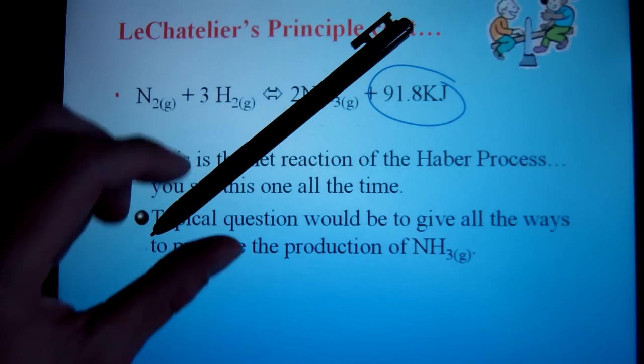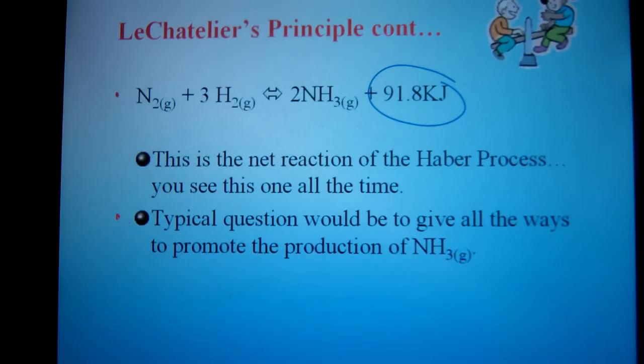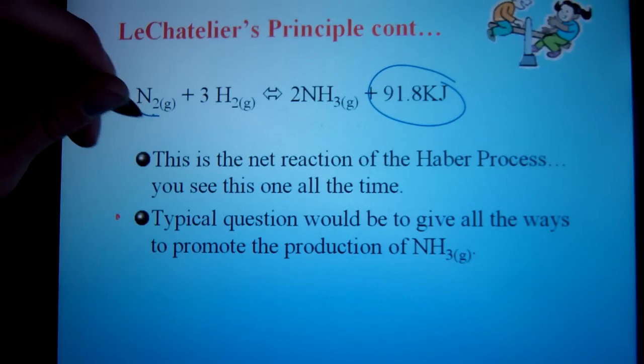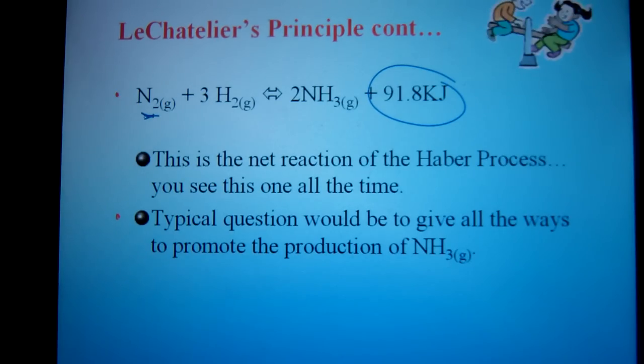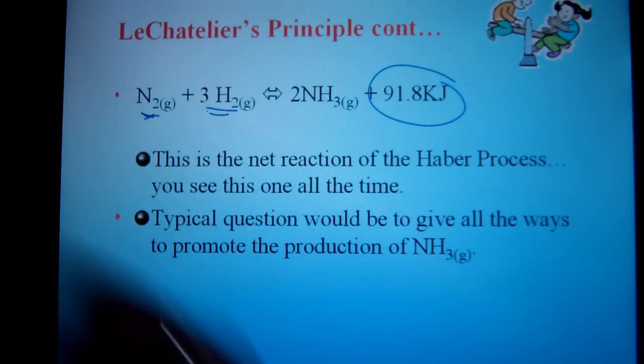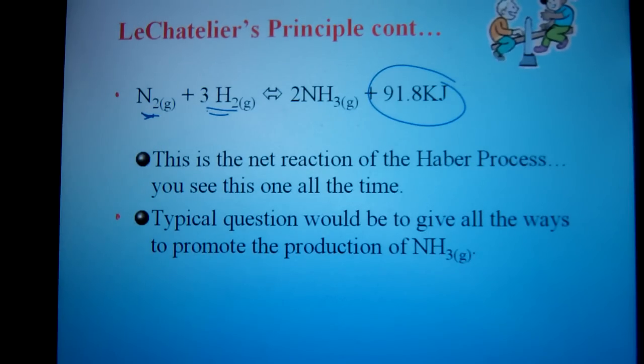When I add the additional nitrogen, the system wants to get rid of it. So the hydrogen that's already there is going to react with it, thereby favoring the forward reaction producing more ammonia and more energy. That would be one way of producing more ammonia. We could increase the concentration of nitrogen. Another way, increase the concentration of hydrogen.